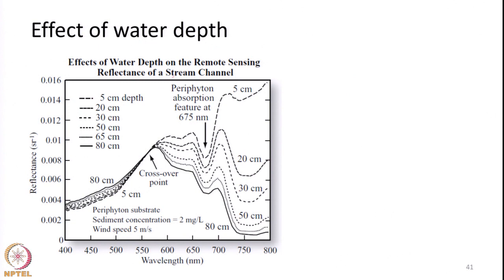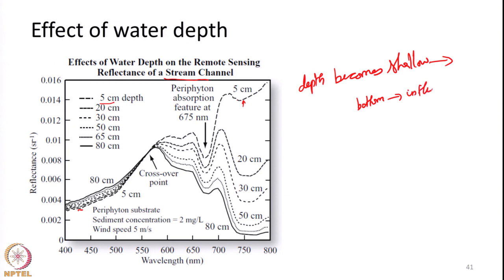An example is given in this particular slide showing the effect of water depth on a stream channel. The stream channel bottom contains some sort of algae under different depths. If the depth is fairly shallow, the reflectance from the algae primarily comes up. You can see very high reflectance in the NIR portion from vegetation, and strong absorptance in the blue region. Essentially, as the depth becomes shallow, the features present on the bottom of the surface will influence the reflectance.